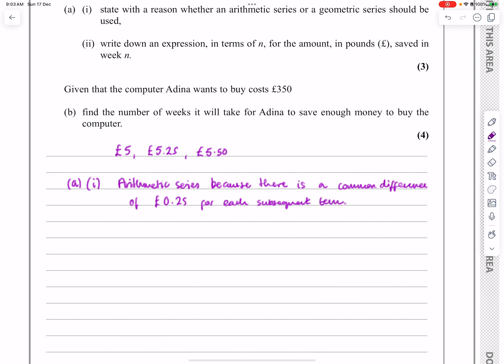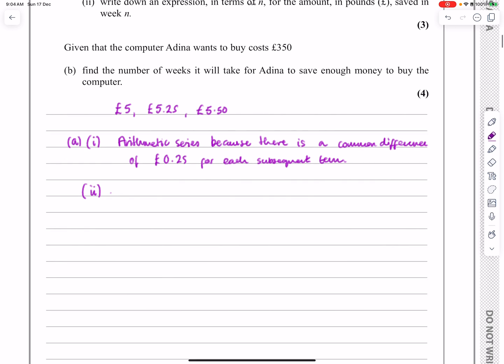That's more than enough information to be able to get A part one done. A part two actually asks, okay, what is the nth term for the series? So nth term is equal to a plus n minus 1 multiplied by d. a is equal to 5, d is equal to 0.25.